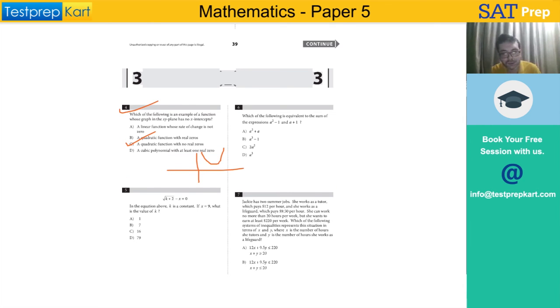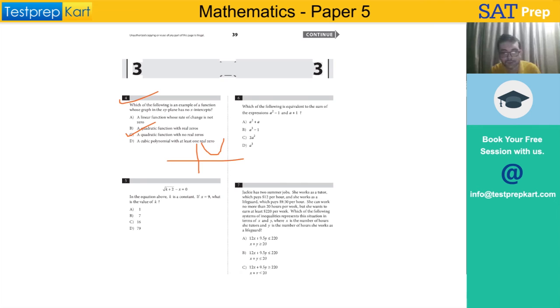Which of the following is equivalent to the sum of the expressions a² - 1 and a + 1? Adding them, -1 and +1 cancel out, so you have a² + a.